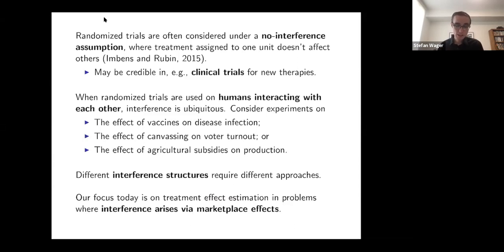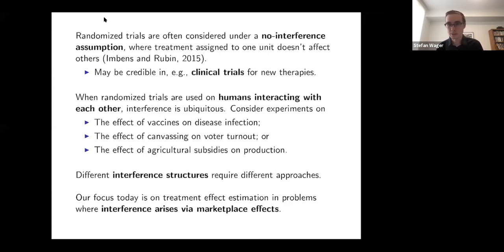Today I want to focus on interference in one context: interference that arises through marketplace effects. This is interference that arises by people changing their behavior, which changes prices, and then affects the incentive landscape for everyone else in the marketplace. Before going there, I want to first give a brief survey of standard randomized trials in the no-interference setting and also talk about some standard ideas for dealing with interference, to give foundations for what we can do in a marketplace study.